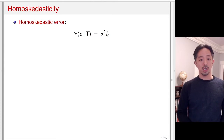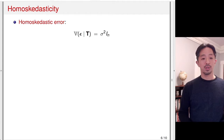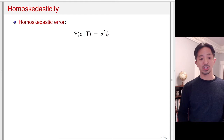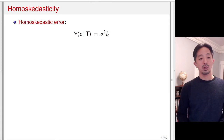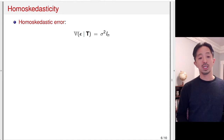An interesting question is how the standard errors obtained from linear regression compare to the standard errors we calculated based on randomization — the Neyman's standard error. Let's first consider the case of homoskedasticity. The homoskedastic error assumption is written as: the variance-covariance matrix of epsilon, where epsilon is a vector of n dimensions, is independent of the treatment variable t.